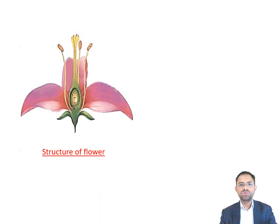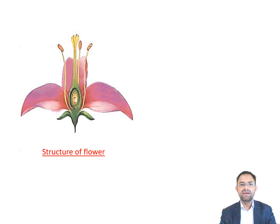Flower is the most beautiful part of a plant. The flower consists of an axis with lateral appendages. Generally, a flower is composed of four distinct whorls: calyx, corolla, androecium, and gynoecium.